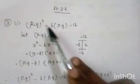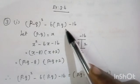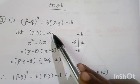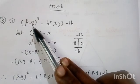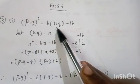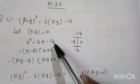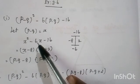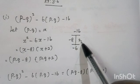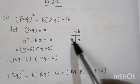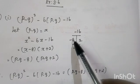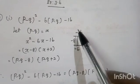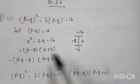For the first problem, write the given question: (p minus q) whole square minus 6(p minus q) minus 16. It is in the quadratic form. Rewrite by letting p minus q equal to x, so it becomes x square minus 6x minus 16. The product value is minus 16 and the adding value is minus 6. For the pair: 8 times 2 gives 16, and minus 8 plus 2 gives minus 6. So factors are (x minus 8) into (x plus 2).